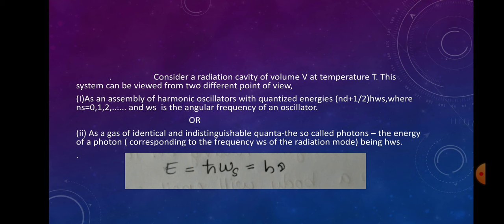Lamp black absorbs 77% and platinum black is about 98% absorption. A perfect black body is 100% absorption.